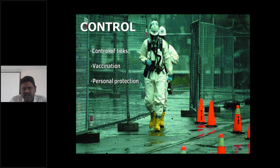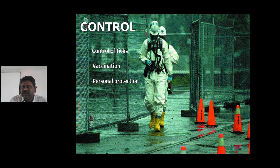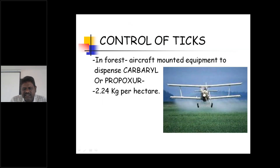To control this disease, we focus on control of ticks, since ticks are mainly responsible for transmitting the disease. What we do is control the ticks. In forest areas, aircraft-mounted equipment is used to dispense carbaryl or propoxur at 2.24 kg per hectare.